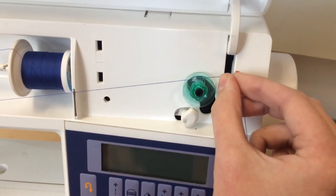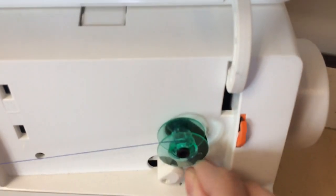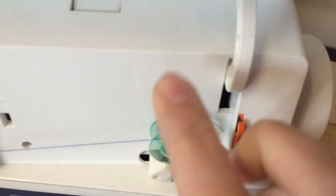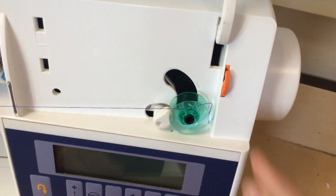Take your thread and wrap it clockwise around your bobbin two or three times. Once you've wrapped it two or three times, push the bobbin down to lock it into place.